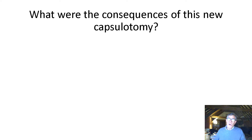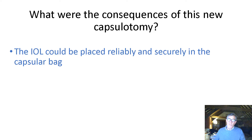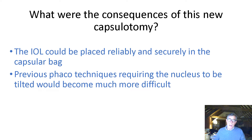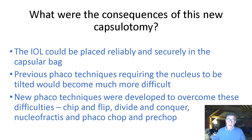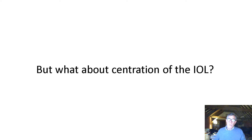But what were the consequences of this new capsulotomy? It meant that the IOL should and could be placed reliably and securely in the capsular bag. Previous phaco techniques requiring the nucleus to be tilted would become much more difficult, and therefore we needed new phaco techniques. These were developed to overcome these difficulties: chip and flip, divide and conquer, nuclear fractis, phaco chop, and pre-chop.